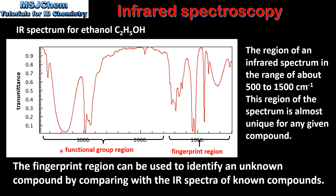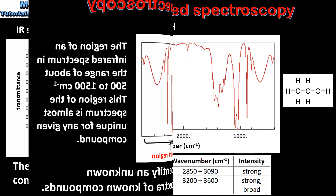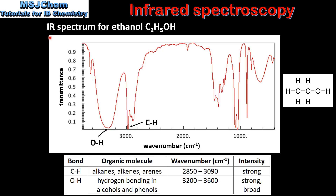The functional group region gives information about the type of bonds that are present within the molecule. Next we'll use an infrared spectrum to identify the bonds in a molecule. By looking at the wave number of the peaks and comparing to the data in the table, we can determine which bonds are present. This peak occurs at a wave number of approximately 2900 cm⁻¹.